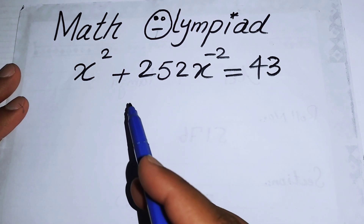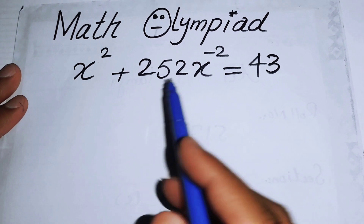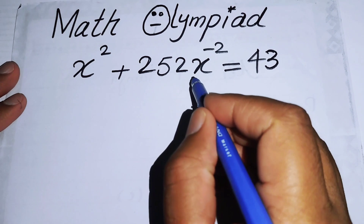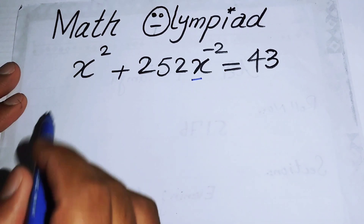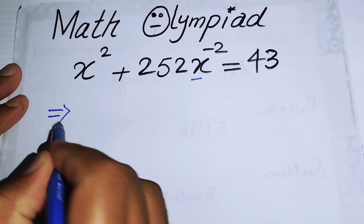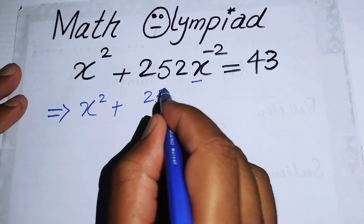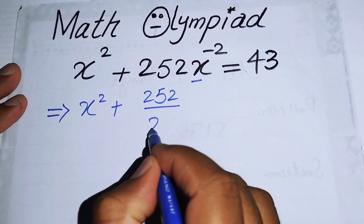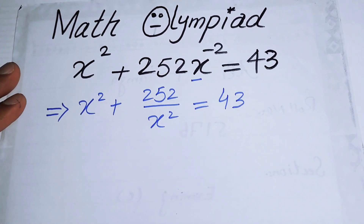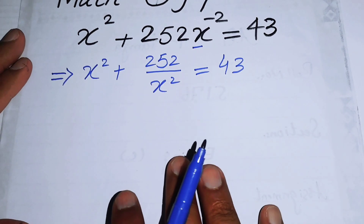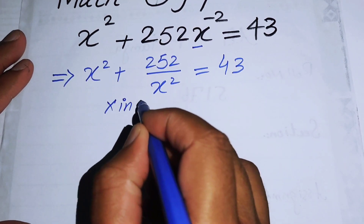We will solve this problem for the value of x. The very first thing we are going to do is simplify this term. Here x⁻² can be moved to the denominator and rewritten as x² + 252/x² = 43.